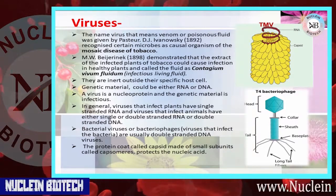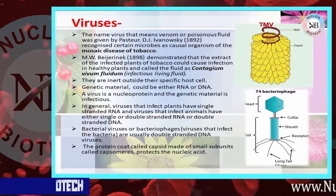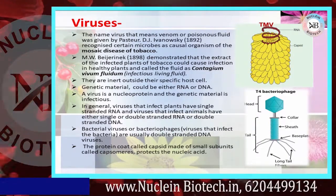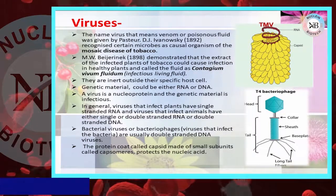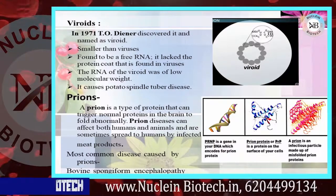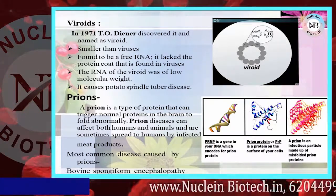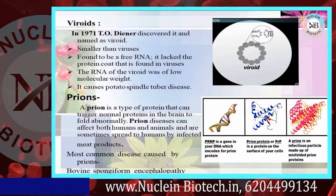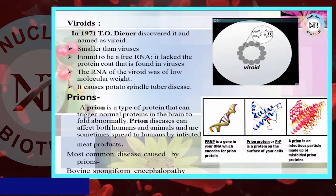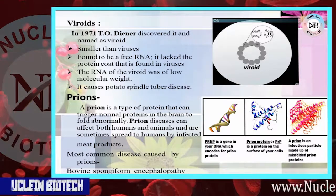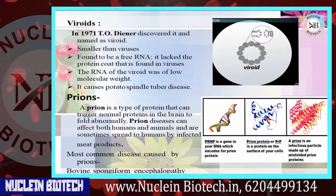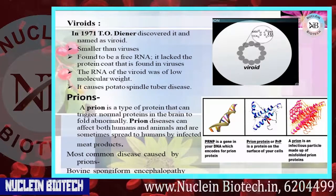Viruses: the name virus, meaning venom or poisonous fluid, was given by Pasteur. It was recognized that certain microbes are the causal organisms of mosaic disease of tobacco. Ivanowsky demonstrated that the extract of infected tobacco plants could cause infection in healthy plants. Viroids are smaller than viruses and consist of free RNA lacking the protein coat found in all other viruses; their RNA is of low molecular weight. Viroids cause potato spindle tuber disease. Prions are a type of protein that can trigger normal proteins in the brain to fold abnormally; prion diseases can affect both humans and animals and are sometimes spread via infected meat products.